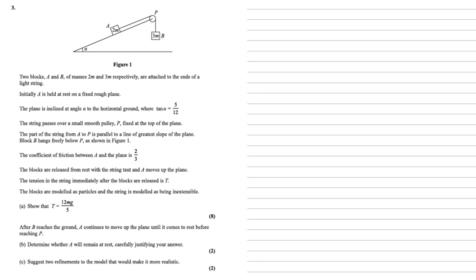Two blocks A and B of masses 2m and 3m respectively are attached to the ends of a light string. Initially A is held at rest on a fixed rough plane. The plane is inclined at angle alpha to the horizontal ground where tan alpha equals 5 twelfths. The string passes over a small smooth pulley P fixed at the top of the plane. A part of the string from A to P is parallel to a line of greater slope of the plane. Block B hangs freely below P as shown in Figure 1. The coefficient of friction between A and the plane is two thirds. The blocks are released from rest with a string taut and A moves up the plane. The tension in the string immediately after the blocks are released is T. The blocks are modelled as particles and the string is modelled as being inextensible.